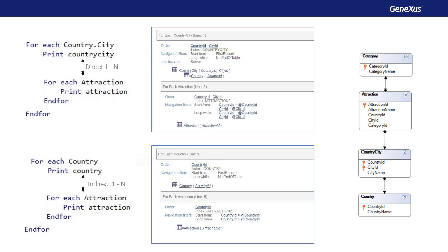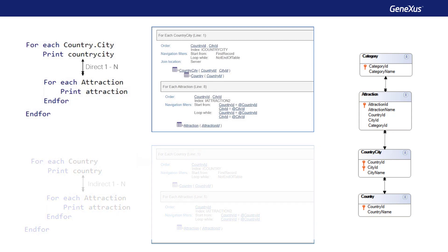Let's look at the navigation lists. For the nested foreach, which in both cases navigates attraction, the entire table is not run through. Note that in the first case, where the relationship is direct, the at sign indicates that it will be filtered by the composite foreign key that establishes the relationship, country ID and city ID.